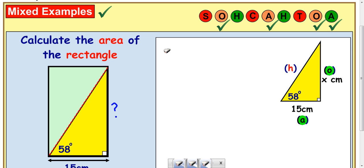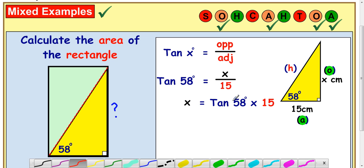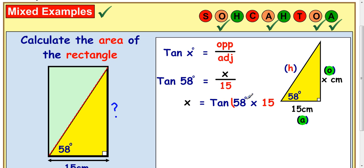So tan of the angle, in this case 58, is equal to opposite over adjacent. So tan 58 is equal to the opposite side is x, and the adjacent side is 15. So to get x, you do 15 multiplied by tan 58, or tan 58 times 15. Make sure you put your 58 in brackets. I haven't done so here. I'll just put the brackets on there. So tan 58 times 15. And out pops your answer of 24 centimeters.